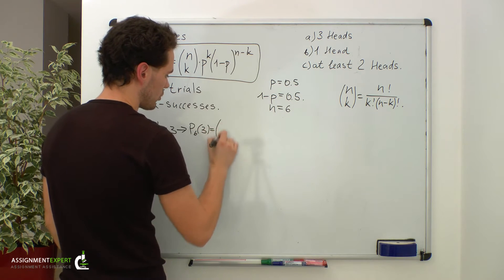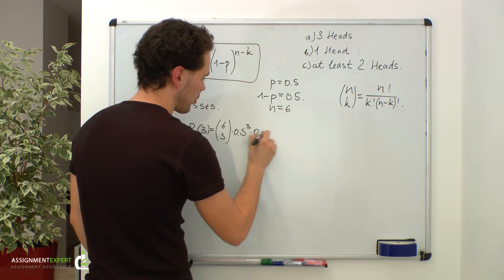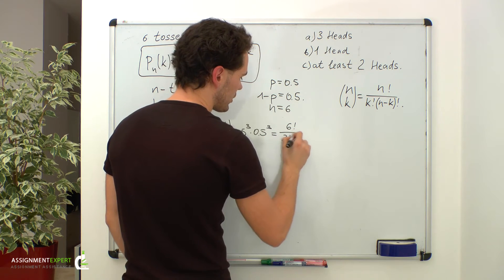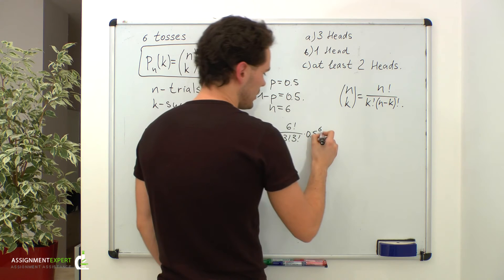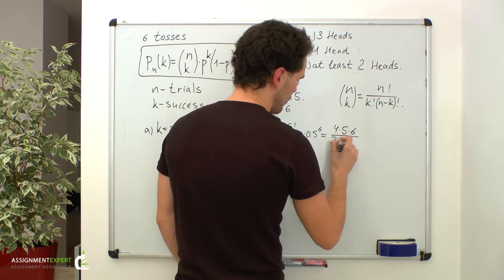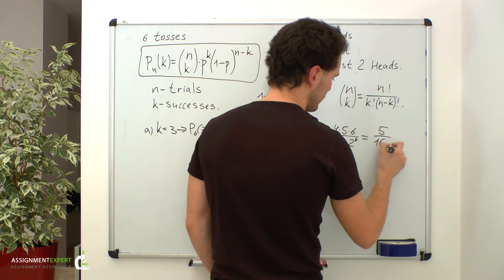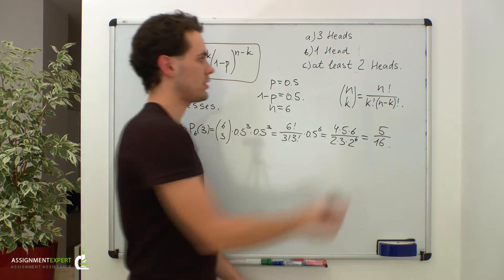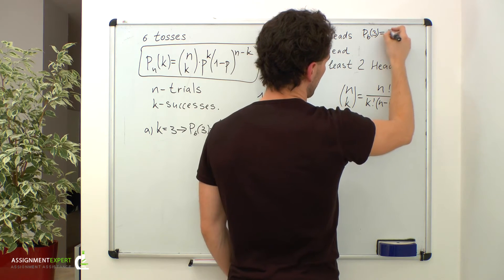Using the formula, the probability of three successes out of six trials equals 6 choose 3 times 0.5 to the third power times 0.5 to the third power. This gives us 6 factorial over 3 factorial times 3 factorial, times 0.5 raised to the sixth power, which simplifies to 4 times 5 times 6 over 2 times 3, times 2 to the sixth power, and equals 5 sixteenths. So the probability of three successes out of six trials is 5/16.